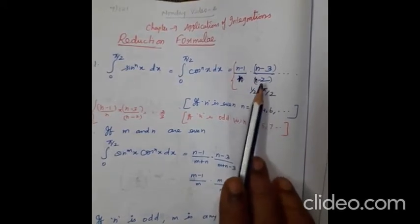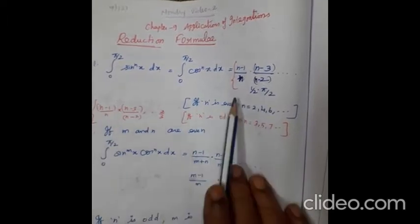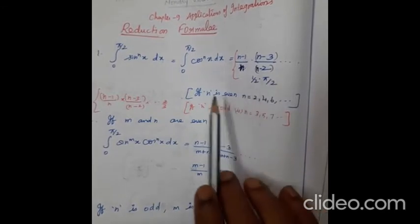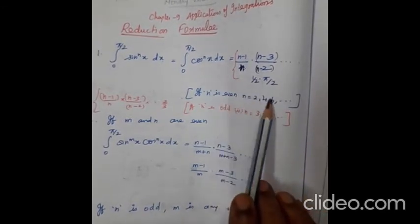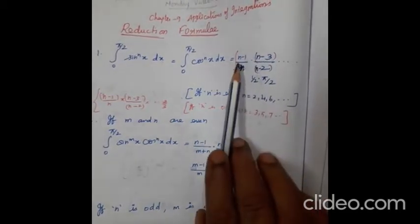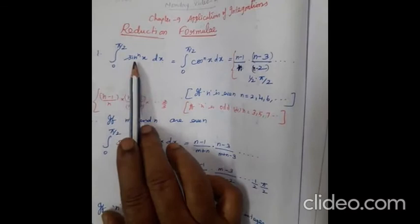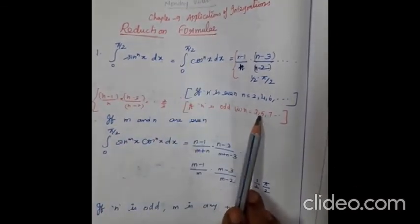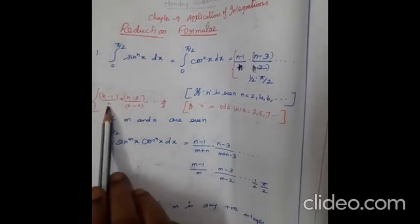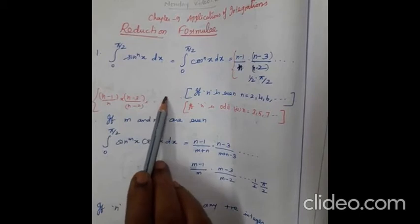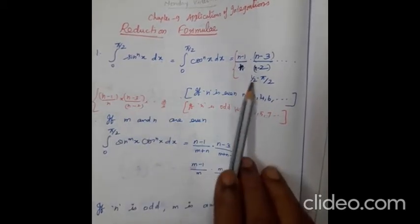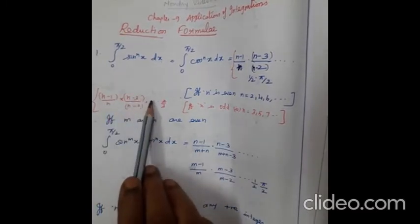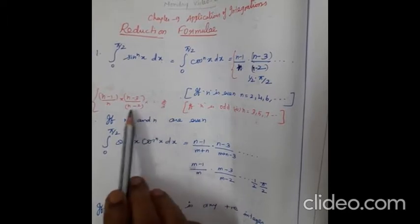For the last video I explained the sum also using the formula. We use 1/2 · π/2 — when will you use this formula? If n is even: n = 2, 4, 6, etc. Suppose n is odd, meaning n = 3, 5, 7, then we apply (n−1)/n · (n−3)/(n−2) etc. and stop with 2/3. If n is even, stop with 1/2 · π/2. If n is odd, go up to 2/3.